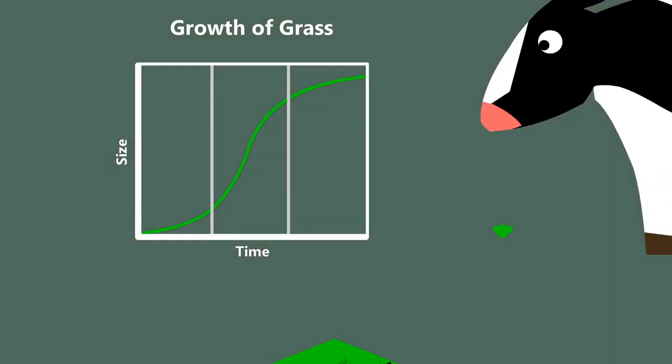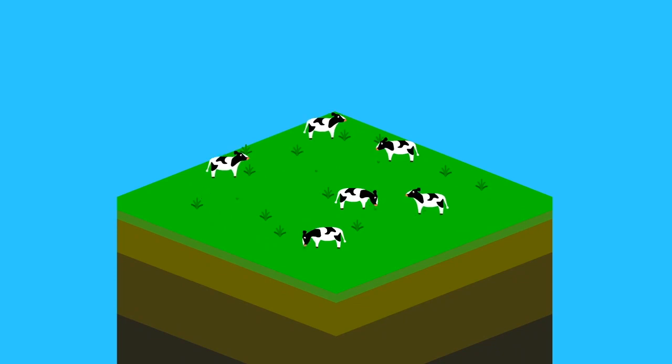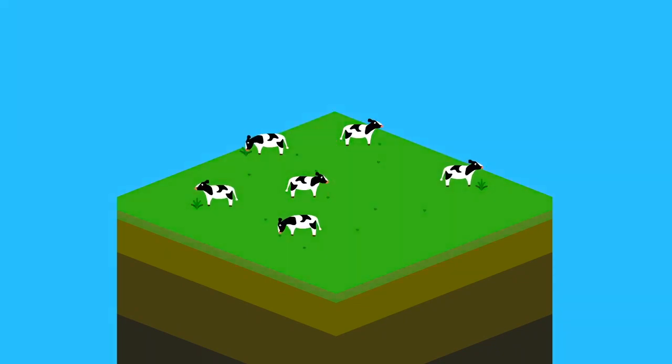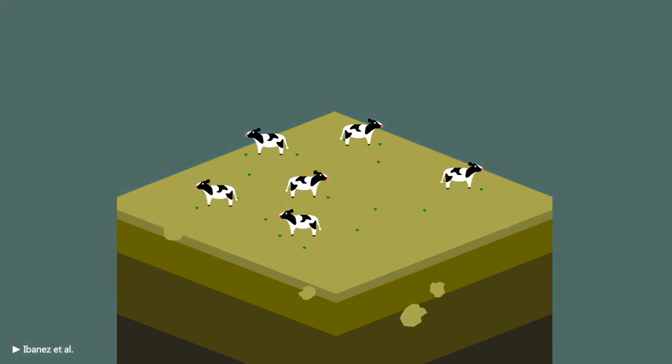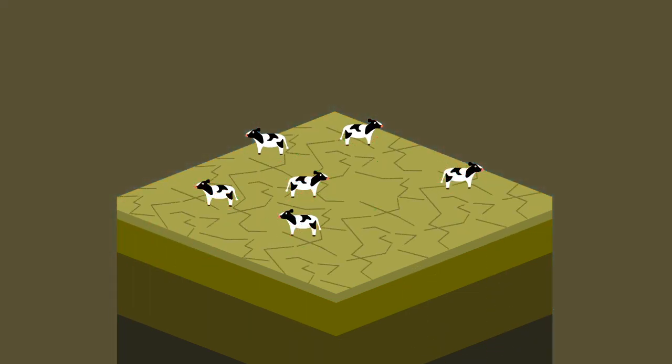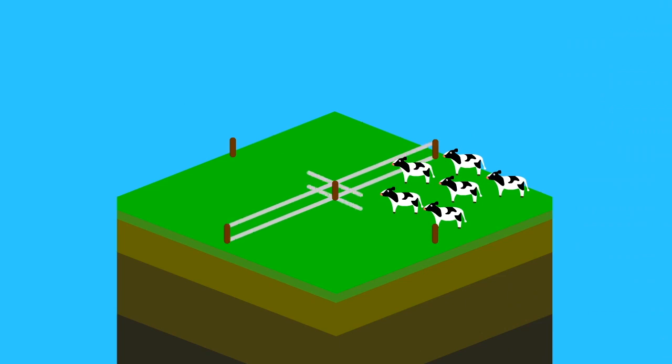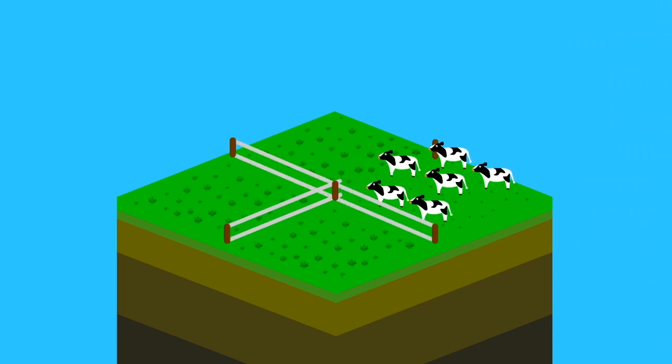This is what happens with traditional pastured animals. They eat all the grass, which doesn't have the chance to grow back fast enough before getting eaten again, and we have overgrazing. This leads to soil erosion, drought, and desertification. But if the animals are kept in a tightly packed herd, like they used to be in nature,